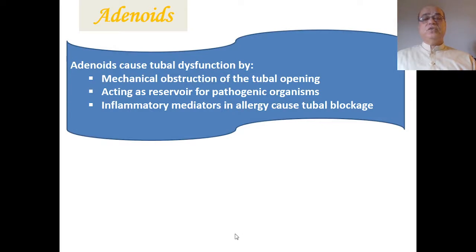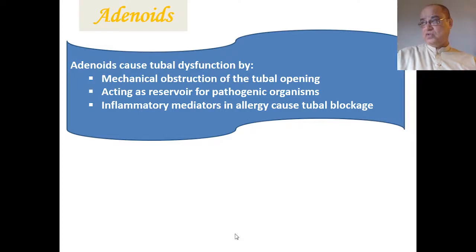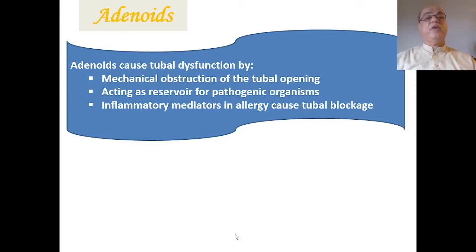Adenoids are an important cause of Eustachian tube dysfunction — not only do they mechanically obstruct the Eustachian tube opening, but they act as a reservoir for pathogenic organisms. Repeated inflammation of the mucosa and submucosa of the nasopharyngeal end of the Eustachian tube can occur from bacteria present in the adenoids, and inflammatory mediators in allergy cause tubal blockage.